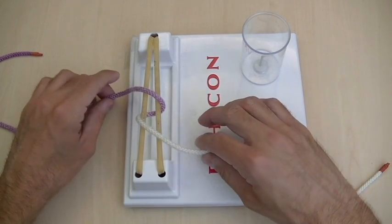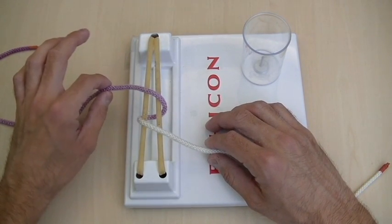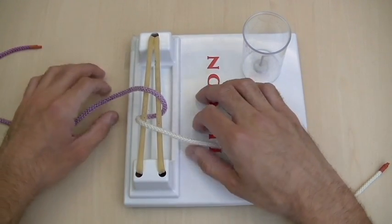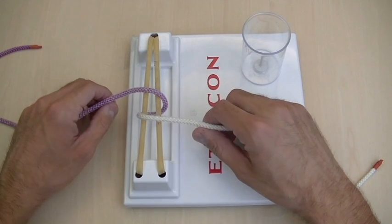As I have this string laid out here, you can see that this purple end is far away from me and the white end is close to me. Also when I grab the string, I'm going to grab it like bicycle handles.